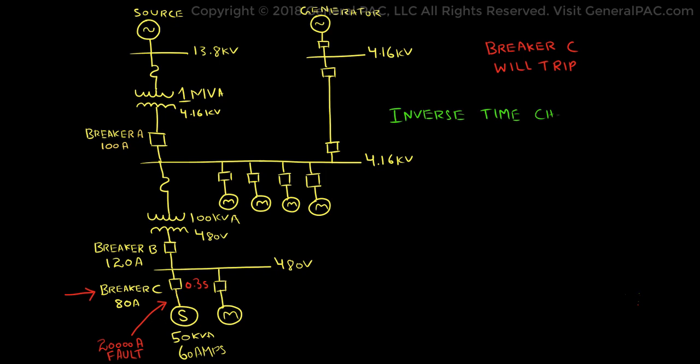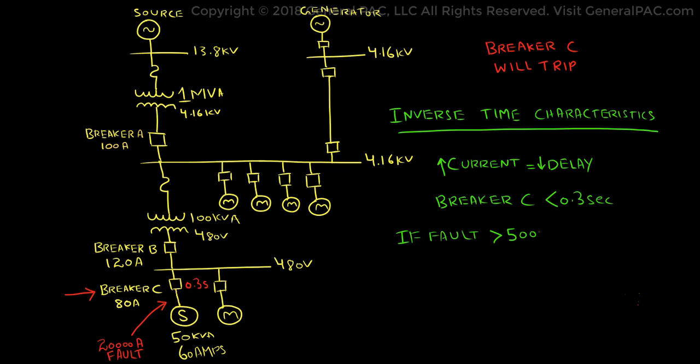If we compare this with the inverse time characteristics, a higher current level would mean a lower time delay. In the case of breaker C, the delay time would be much less than 0.30 seconds. Depending on the inverse time characteristic curve of the breaker, it might trip after 0.10 seconds of delay. Conversely however, if the fault current was only 5000 amps, then the delay time would be much greater than 0.30 seconds.